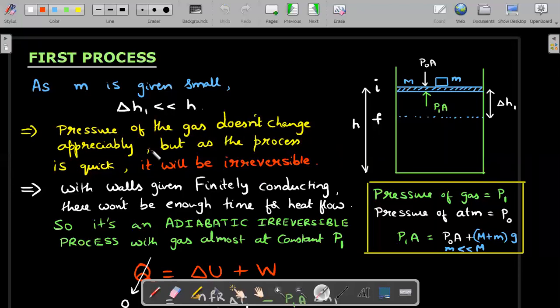As mass given is very small, delta H1 is very small compared to the total height, which means gas did not appreciably change its state. The pressure of the gas doesn't change appreciably because if you write the equilibrium condition when the piston comes to this position, removing a small M from the force balance doesn't change the pressure P1 by much. So my argument is the pressure doesn't change appreciably because the process is quick and it will be irreversible.